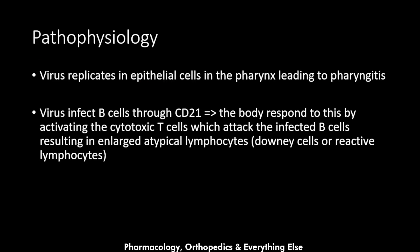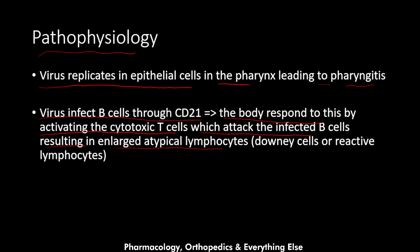The pathophysiology of mono is that the virus replicates in the epithelial cells of the pharynx, leading to pharyngitis. The virus then infects B cells through CD21. The body responds by activating cytotoxic T cells which attack the infected B cells, resulting in enlarged atypical lymphocytes — also called mononuclear cells, Downey cells, or reactive lymphocytes.